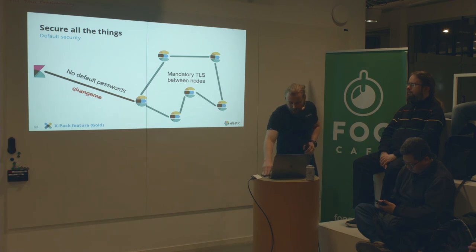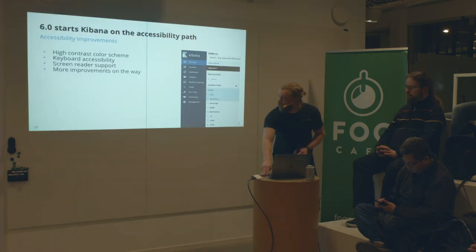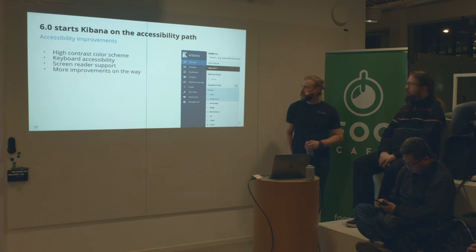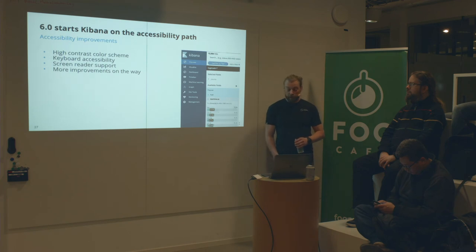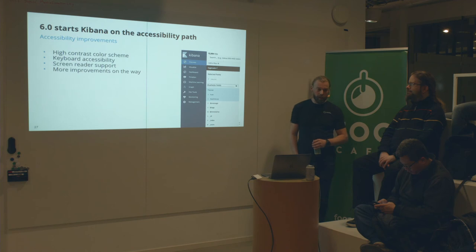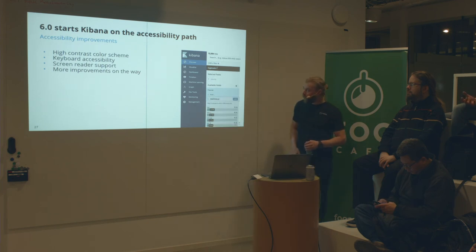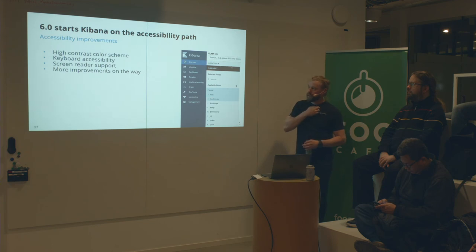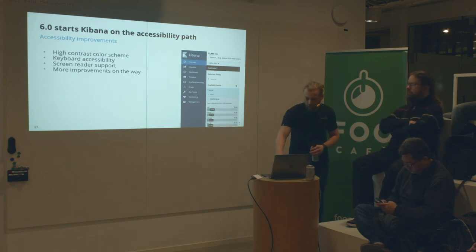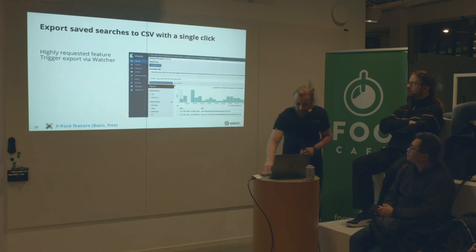Let's move on to Kibana, the UI of Elastic. The first thing you'll notice in 6.x is a new color scheme. In 5.x we had bright pink colors with white text — it looked nice but wasn't good for accessibility. So in 6.x we use a high-contrast color scheme. You also now have keyboard accessibility, so you can navigate the entire UI using only a keyboard.